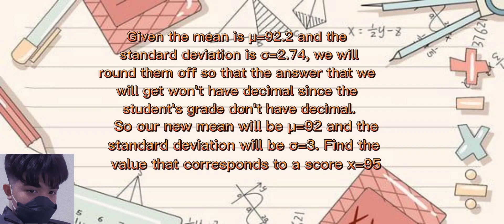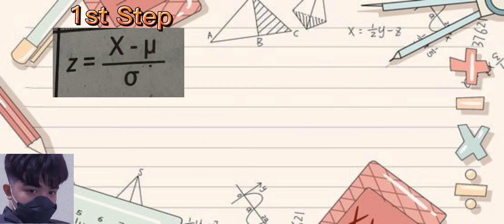And for our standard deviation, it will be equal to 3. Now, we are going to find the value that corresponds to a score X is equal to 95. To find the value, we will use the formula Z is equal to X minus population mean over population standard deviation.